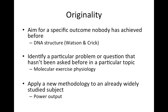Looking at originality, we can achieve this goal in one of three ways. Firstly, we can aim for a specific outcome that's not been achieved before — an example here might be when Watson and Crick were looking to unearth the structure of DNA. But on a more realistic level for undergraduate dissertations, we might achieve originality through the second two approaches, such as identifying a particular problem or question that's not been asked before in a particular topic.